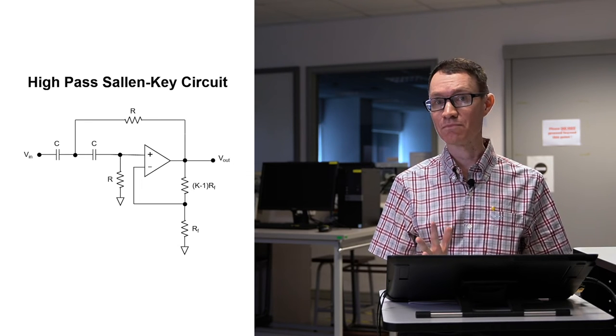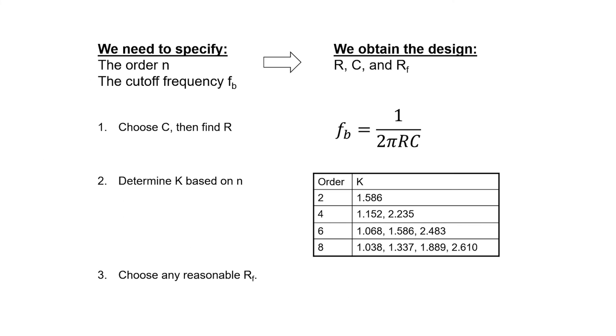The design procedure is the same in both cases. We just need to specify the order n, the cutoff frequency f sub b, and then using the procedure that we used for the low-pass filter, we can obtain the design, the resistors, capacitors, and feedback resistors.